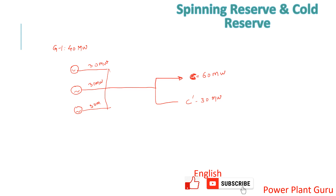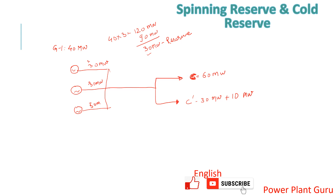Now let us calculate the spinning reserve. Total capacity is 40 into 3 which is 120 megawatt, and the demand is 90 megawatt. So 30 megawatt is the reserve capability available. Let us say there is a case of sudden demand rise — a 10 megawatt increase. If you have 30 megawatt of reserve there will be no problem in meeting this 10 megawatt increase. So at roughly 33.3 megawatt per generator you will be able to supply 100 megawatt. Here your reserve is coming into play.